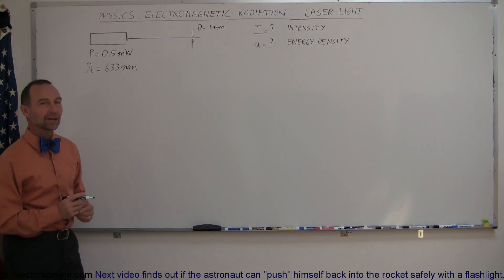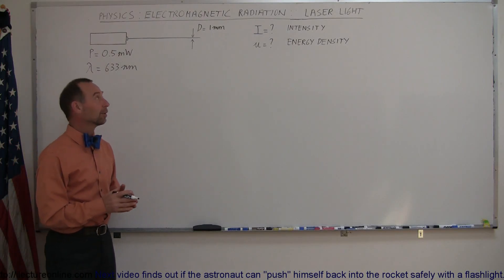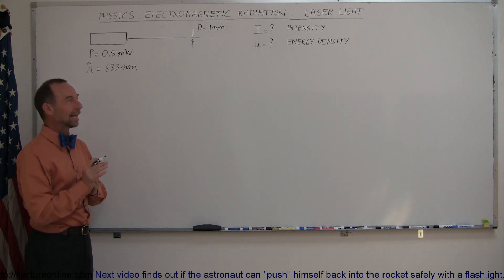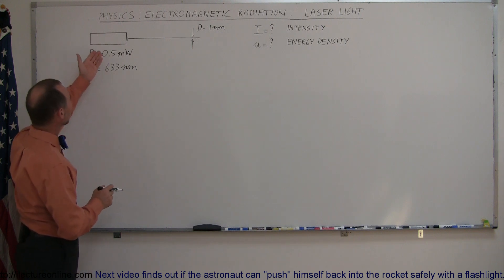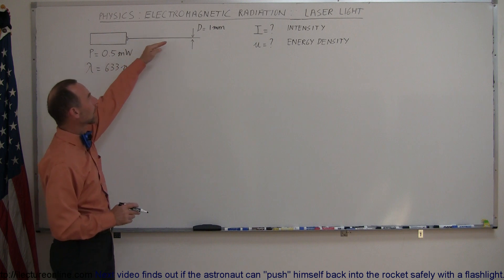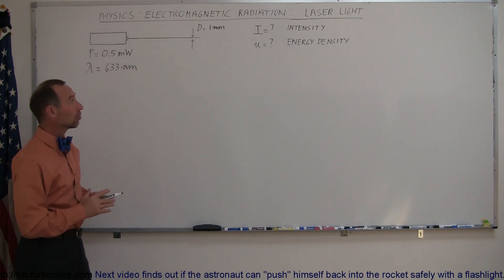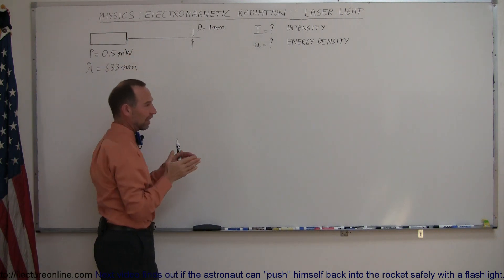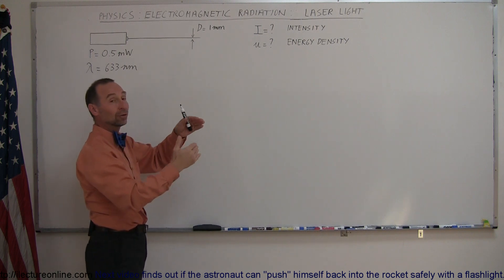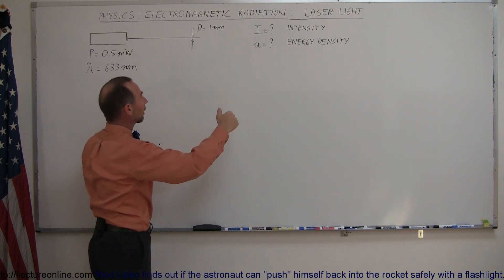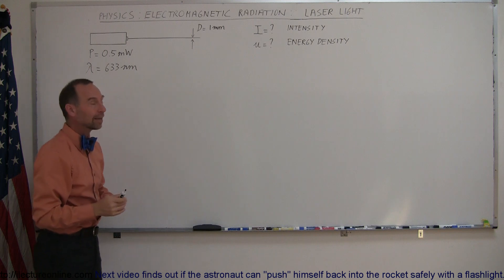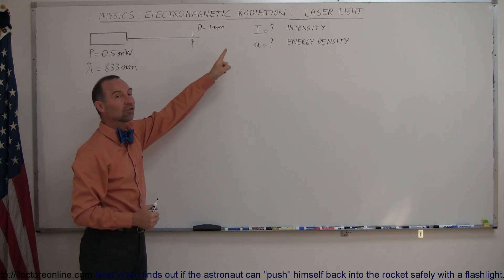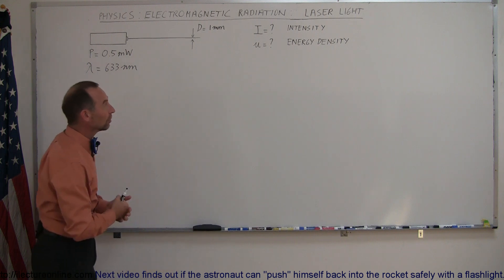Welcome to Electronline. Here's another example of how to work with electromagnetic radiation — in particular, we're going to look at laser light. Here's a little picture of a laser with a beam coming out. The interesting thing about lasers is that the beam doesn't spread out like with a flashlight. With a flashlight the beam gets wider, so the intensity gets weaker as you go farther out. With lasers, that's typically not the case — laser light maintains its beam, so the intensity doesn't change with distance.